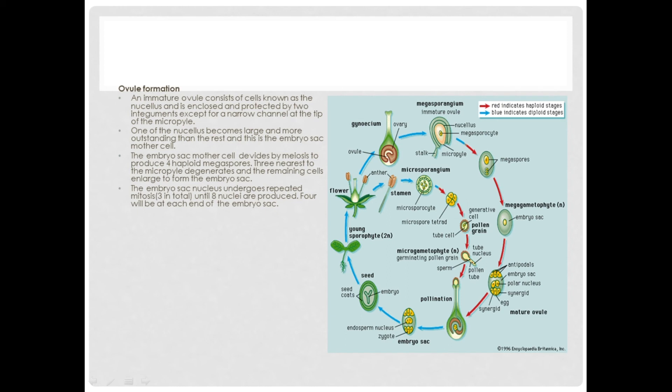One from each end will move to the center and these ones will become the polar nuclei. One nucleus from each polar group moves to the center of the embryo sac and these are the polar nuclei.